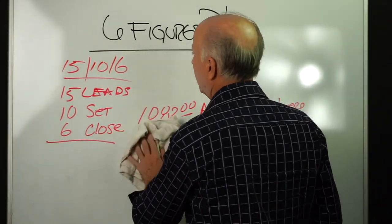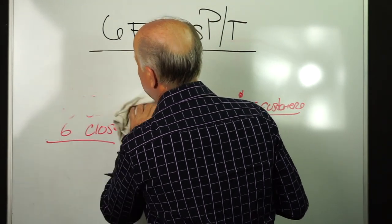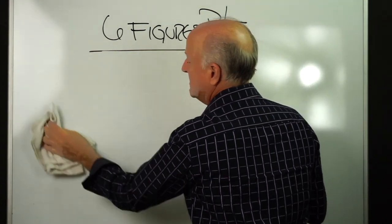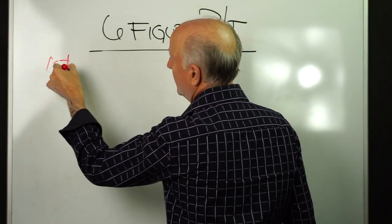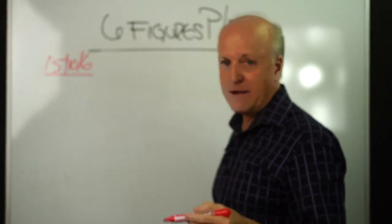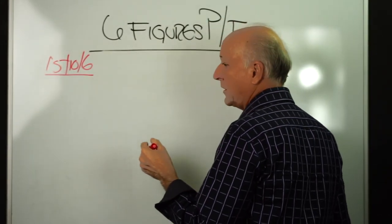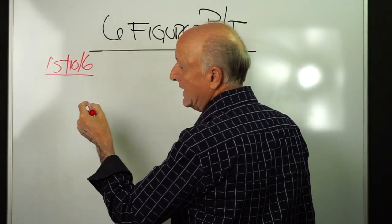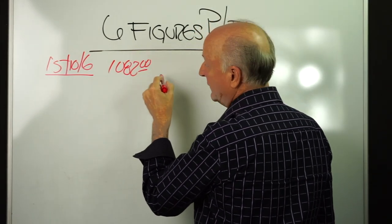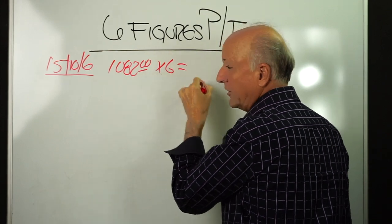So now let's break that down and what it means to income. We're going to do 15, 10, and 6. We're going to buy 15 leads, set 10 appointments, close six.